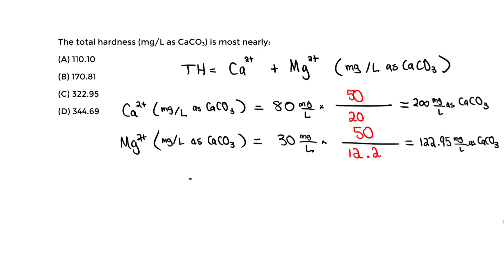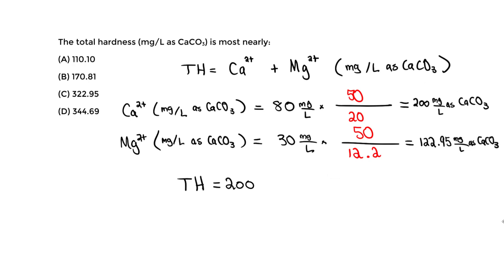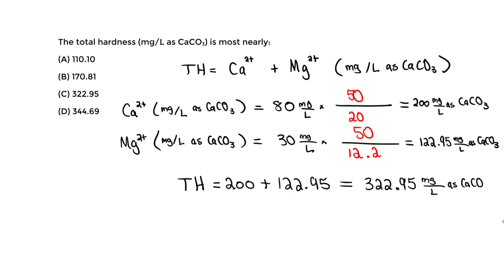So the total hardness equals 200 plus 122.95. Both are in units of mg per liter as calcium carbonate. The total summation gives us approximately 322.95 mg per liter as calcium carbonate. That should be our answer, and in this case it's answer choice C. Thank you.